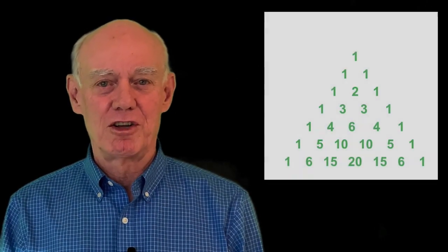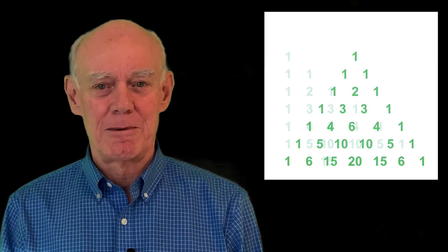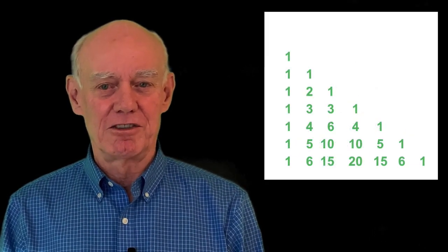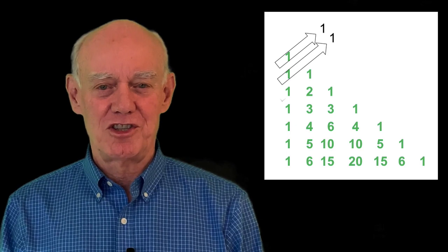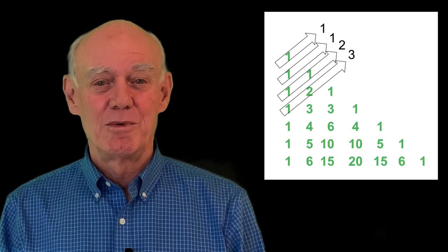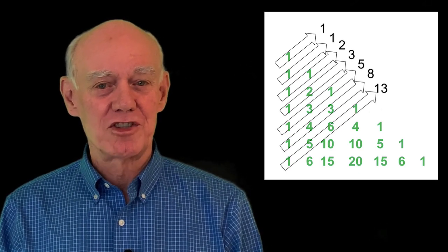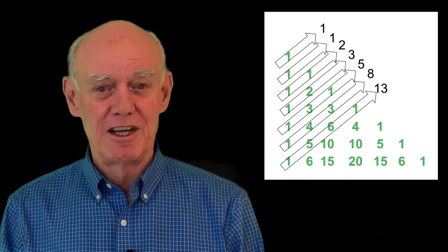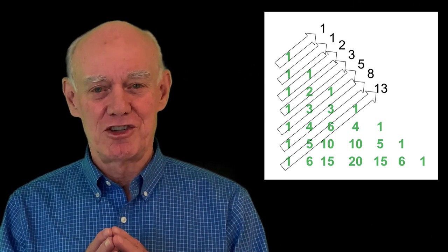Let's take Pascal's triangle and push each row to the left. Now let's add up the numbers in the diagonals — the Fibonacci sequence appears. We have another example of two things in mathematics that initially seemed unrelated, and then we find that they actually have a close relationship.